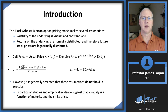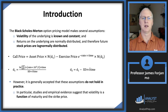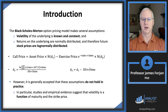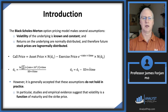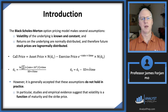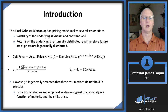These three guys made a couple of really important assumptions around 1970. The first one was that volatility of the underlying asset, whether it's equity or currency as it is in this chapter, is known and constant. In addition, they assumed that returns on the underlying asset are normally distributed, which then translates into stock prices being log-normally distributed.